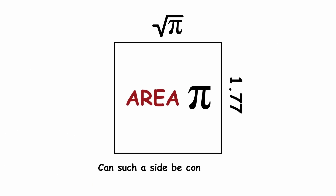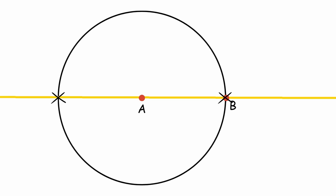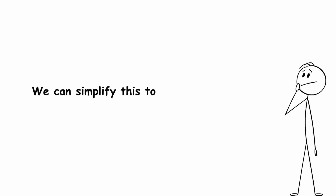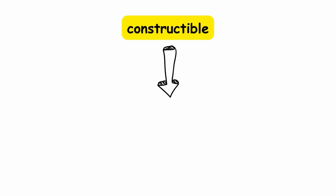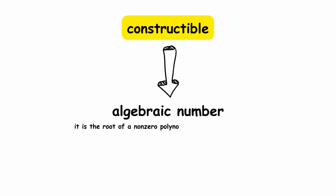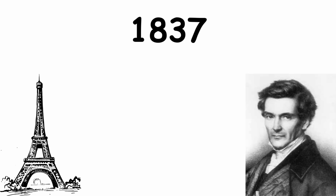Can such a side be constructed? In other words, is the square root of pi a constructible number? Using known compass and straightedge constructions, we can simplify this to asking whether pi is a constructible number. In order to be constructible, one condition is that it must be an algebraic number — meaning it is the root of a non-zero polynomial with integer coefficients — as opposed to a transcendental number, which is not. This condition was proven in 1837 by French mathematician Pierre Wantzel.